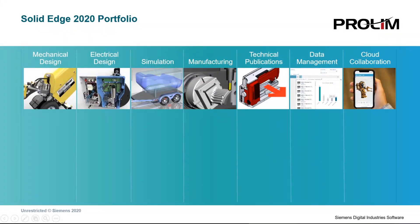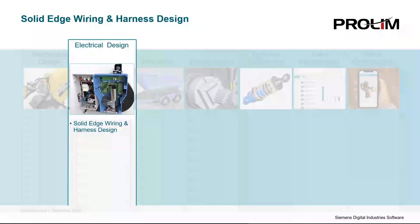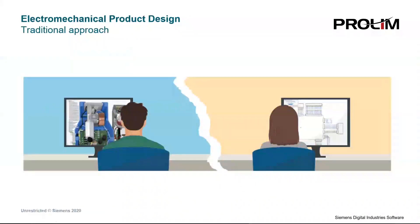When we talk about Solid Edge, we're really talking about an entire portfolio organized into seven pillars — it's not just MCAD anymore. Over the last few years more than 55 products have been added to this portfolio. The Capital software now lives in the electrical design portfolio as Solid Edge Wiring and Harness Design, tightly integrated and made available to Solid Edge users.